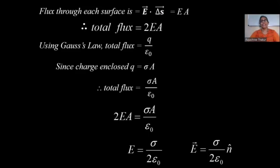So this is the formula for electric field derived using Gauss's law for a uniformly charged infinite plane sheet. The third and last example we will see in the next session. That is all for today. See you next time.